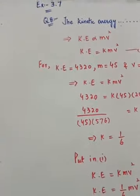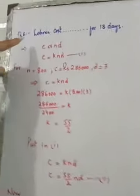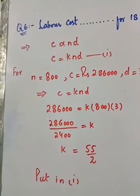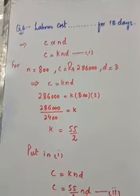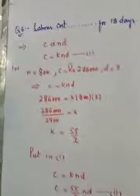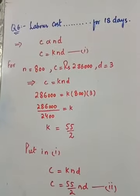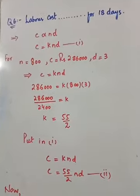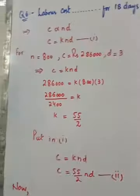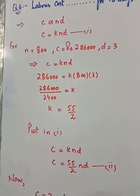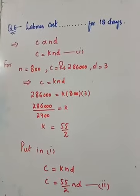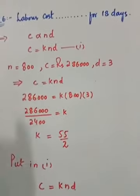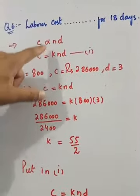Welcome grade 10 students, Exercise 3.7 question number 6. I am reading for you: labor cost c varies jointly as number of workers n and average number of days d. This means c is directly proportional to n and d. If cost of 800 workers for 13 days is 286,000, then find labor cost of 600 workers for 18 days.